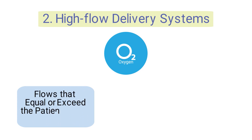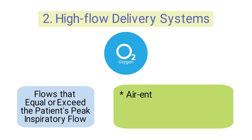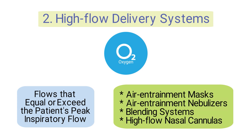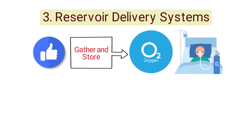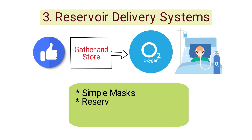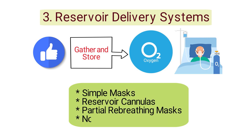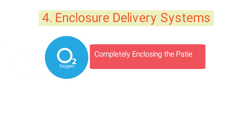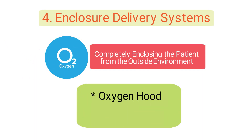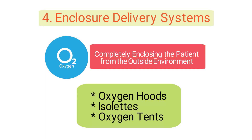High flow delivery systems provide oxygen at flows that equal or exceed the patient's peak inspiratory flow. This includes air entrainment masks, air entrainment nebulizers, blending systems, and high flow nasal cannulas. Reservoir delivery systems gather and store oxygen between the patient's breaths, including simple masks, reservoir cannulas, partial rebreathing masks, and non-rebreathing masks. Enclosure delivery systems provide oxygen by completely enclosing the patient from the outside environment, including oxygen hoods, isolettes, and oxygen tents.